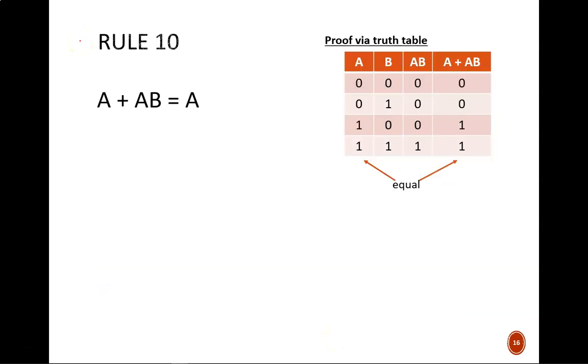The basic form of rule 10 is A or AB equals A. It means we can drop off this AB term. This is surprising at first, so let's prove it in a couple of ways.